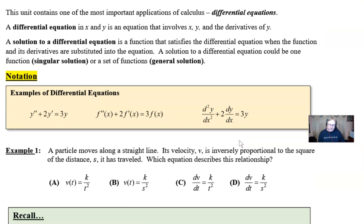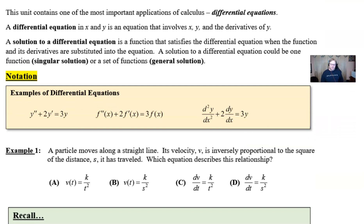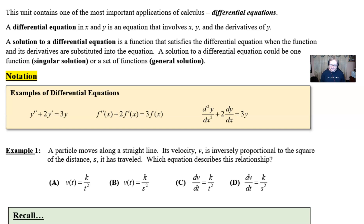Here are a couple of examples to work through. For the first example, don't get the wrong idea — let's read it carefully. A particle moves along a straight line. Its velocity v is inversely proportional to the square of the distance s it has traveled. Of four given equations, which one describes this relationship? Pause the video and think through the options.